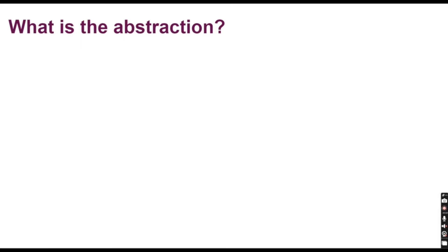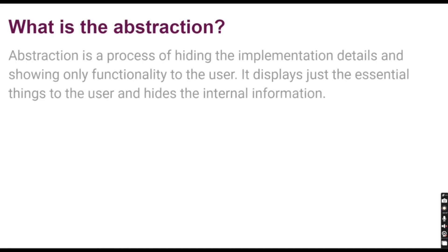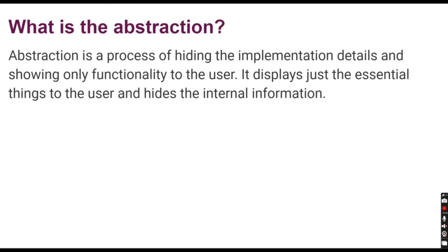We have already covered three important concepts of object-oriented programming: inheritance, encapsulation, and polymorphism. The last one is abstraction. Abstraction is a process of hiding the implementation details and showing only the functionality to the user. It displays just the essential things to the user and hides the internal information.